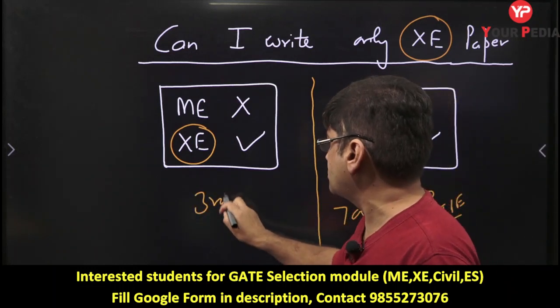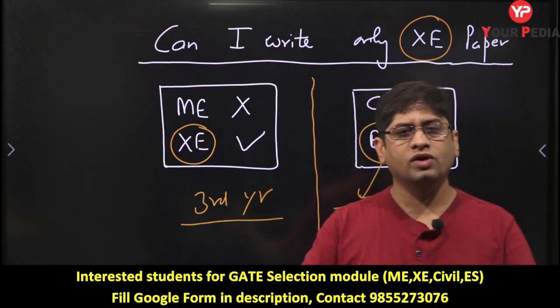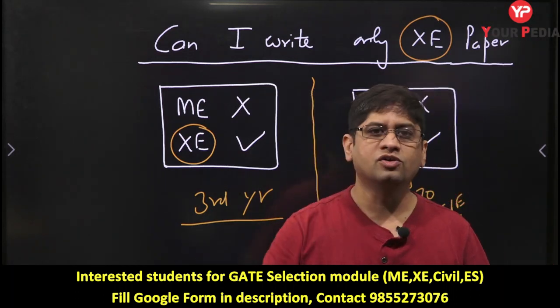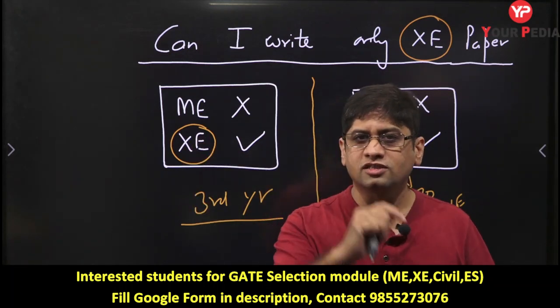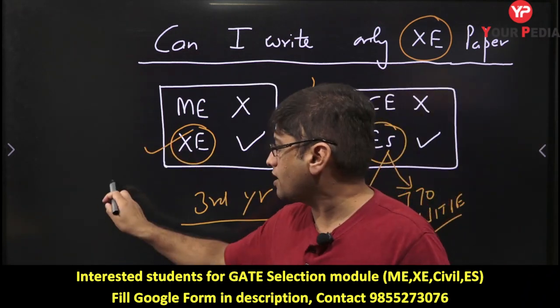students. Why am I saying third-year students? Because in third year, why would you want to write two papers? In third year, write only one paper and score really good, because your GATE score is valid for three years for higher education. Now let's assume you wrote in third year only with XE paper - you prepared let's say Strength of